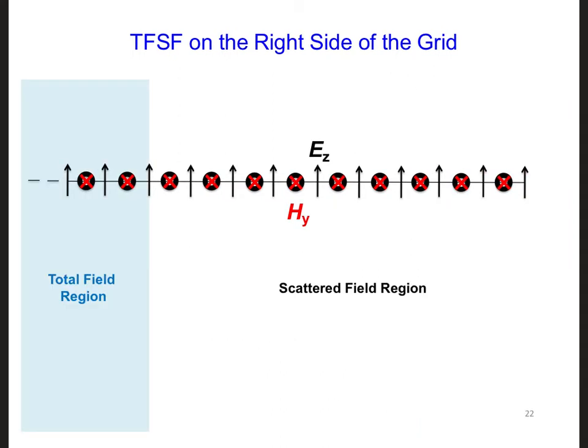Now, you can go through the same process for the right side of the grid, where the other interface is between the total and scattered field regions. Be careful that you call on the correct I indices for the incident fields in your special updates at the interfaces, and that the incident fields have the correct signs in your correction equations.